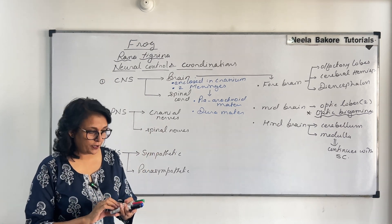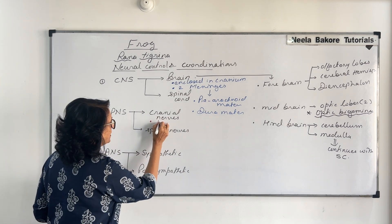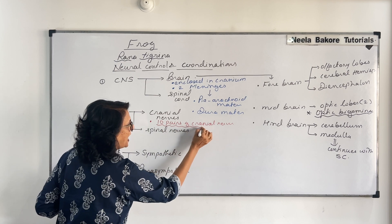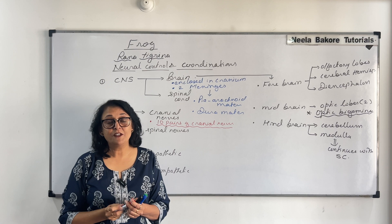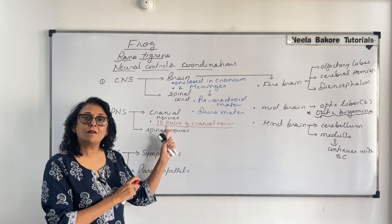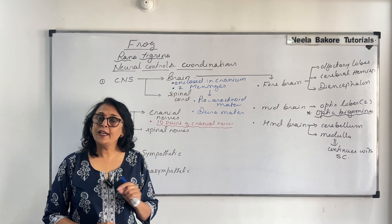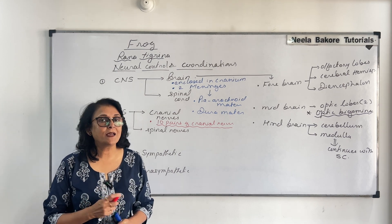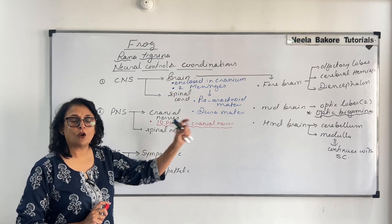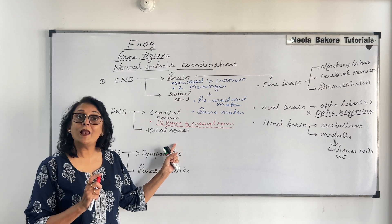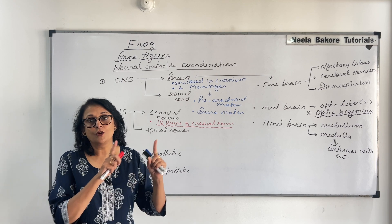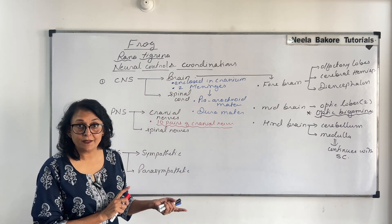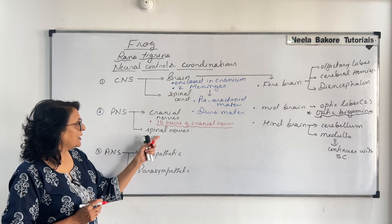Now let us come to the cranial nerves — very important. There are 10 pairs of cranial nerves in frogs. Questions have been asked on this many times. In humans we have a dicondylic skull, where the occipital bone has two semicircular bulges called the occipital condyles. Frogs also have a dicondylic skull. However, humans have 12 pairs of cranial nerves, whereas frogs have 10 pairs. The dicondylic skull is a common feature, but the number of cranial nerves differs.